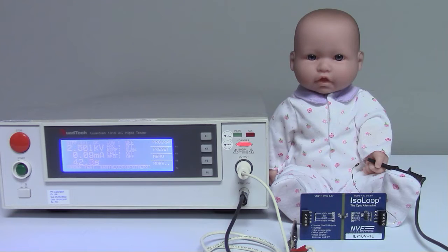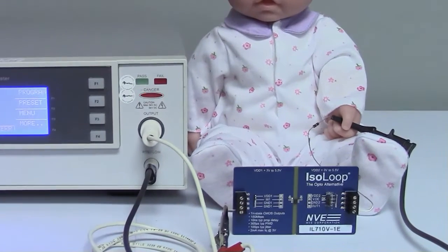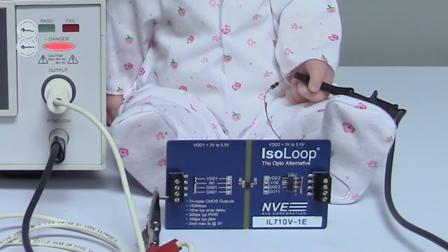The tester is set for 2,500 volts, which is a common safety standard. 2,500 volts is a higher voltage than you'd normally encounter, so there's a safety buffer for surges. One of our isolators is between the tester and the doll, so the doll is safe.